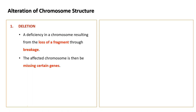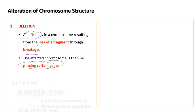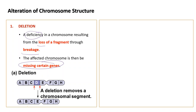The first alteration involves deletion, which is a deficiency in a chromosome resulting from the loss of a fragment through breakage. The affected chromosome is then missing certain genes. For example, the chromosomal segment labeled D is missing, resulting in a shorter chromosome with fewer genes.